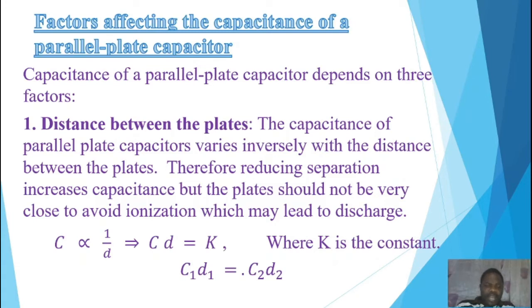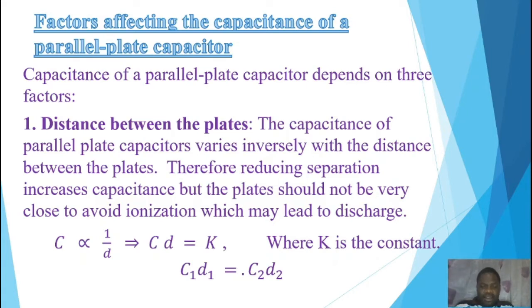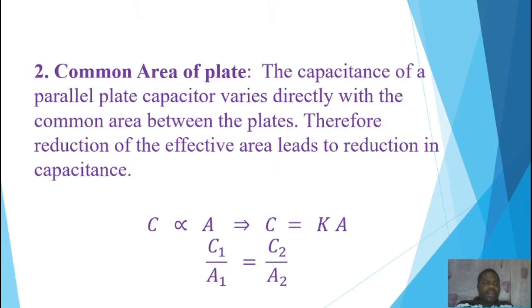Mathematically, C is inversely proportional to D, which implies C×D = K (where K is the constant). This gives us C₁D₁ = C₂D₂.